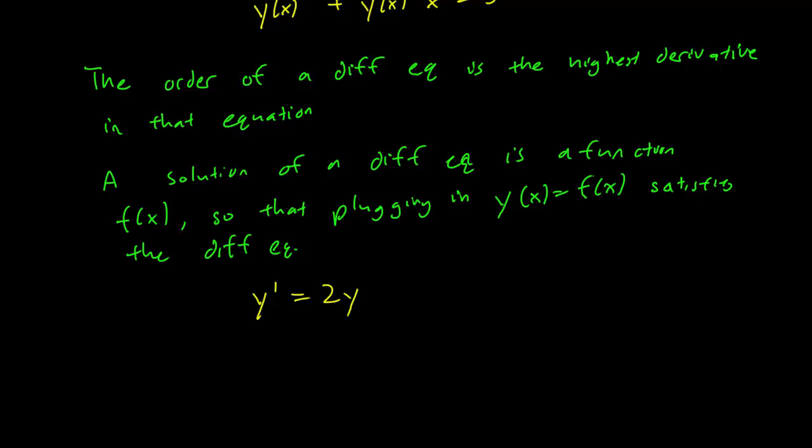And one thing to notice is that if you plug in y equals e to 2x, taking the derivative of this function y using the chain rule, we get 2e to 2x.